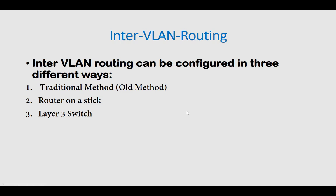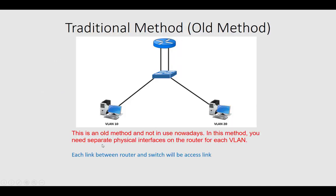Inter-VLAN routing can be configured in three different ways. One is the traditional method, which is an older method. The next one is router on a stick. The third one is a layer 3 switch or multi-layer switch. The traditional method is an older method and not in use nowadays. In this method, you need separate physical interfaces on the router for each VLAN. Each link between the router and the switch will be an access link. If you have 100 VLANs in an enterprise environment, this method is not scalable — you are going to waste hundreds of ports on the switch and need a lot of routers with a lot of ports.